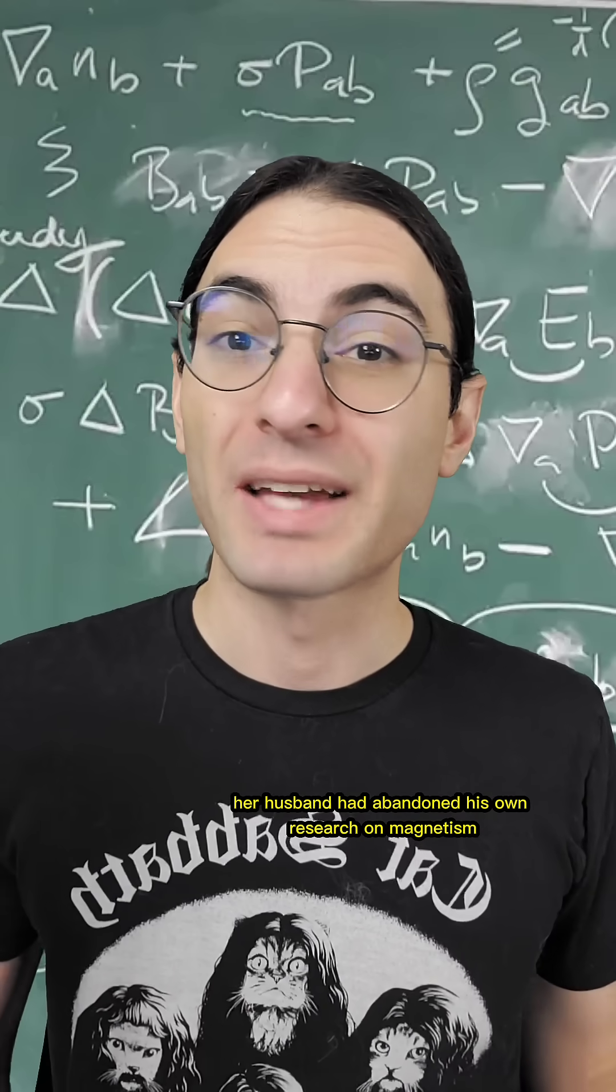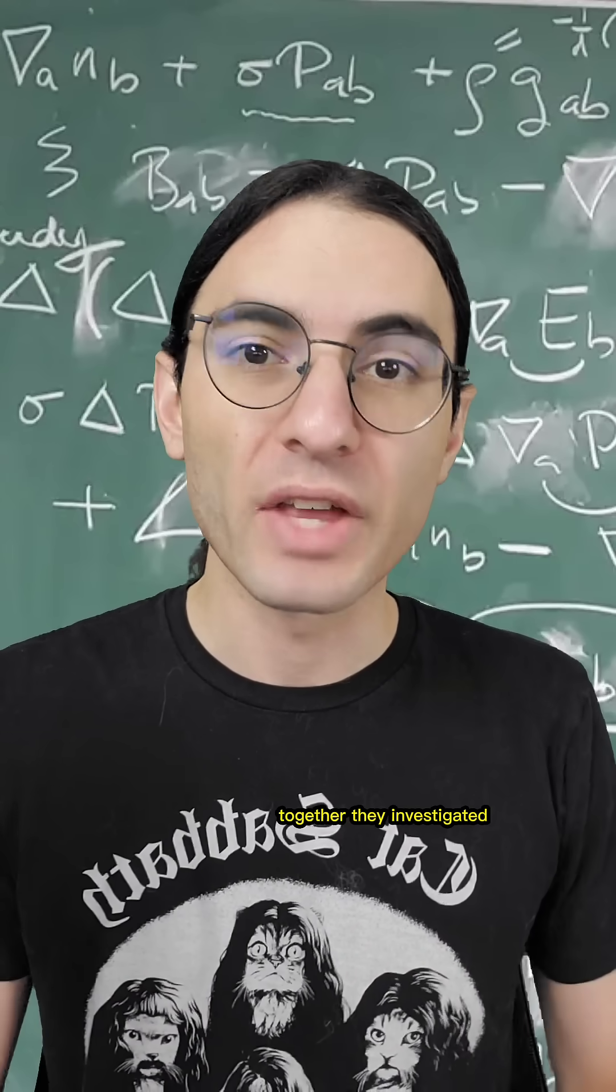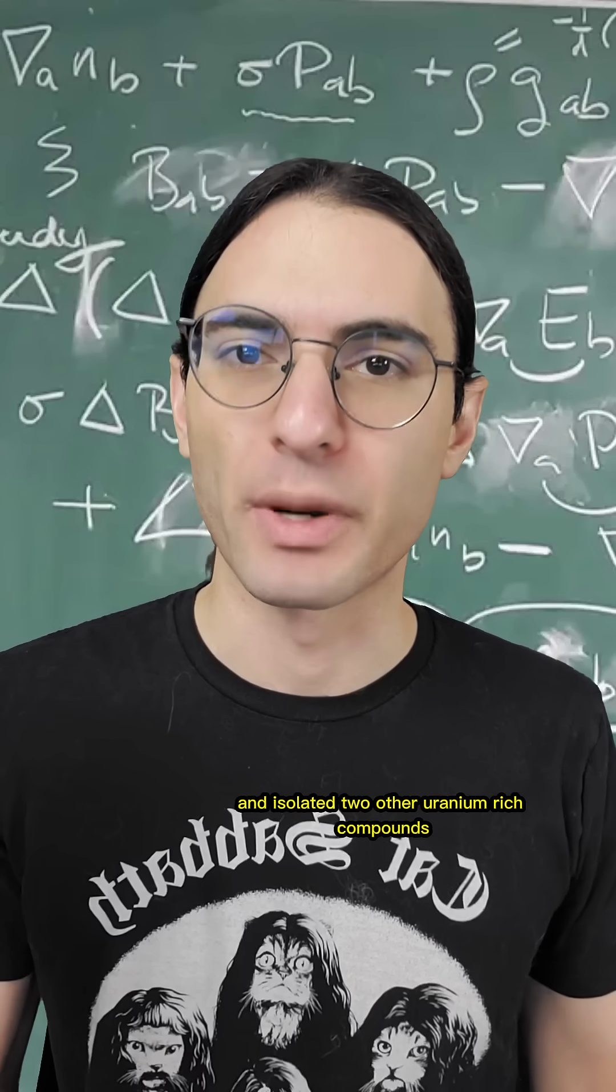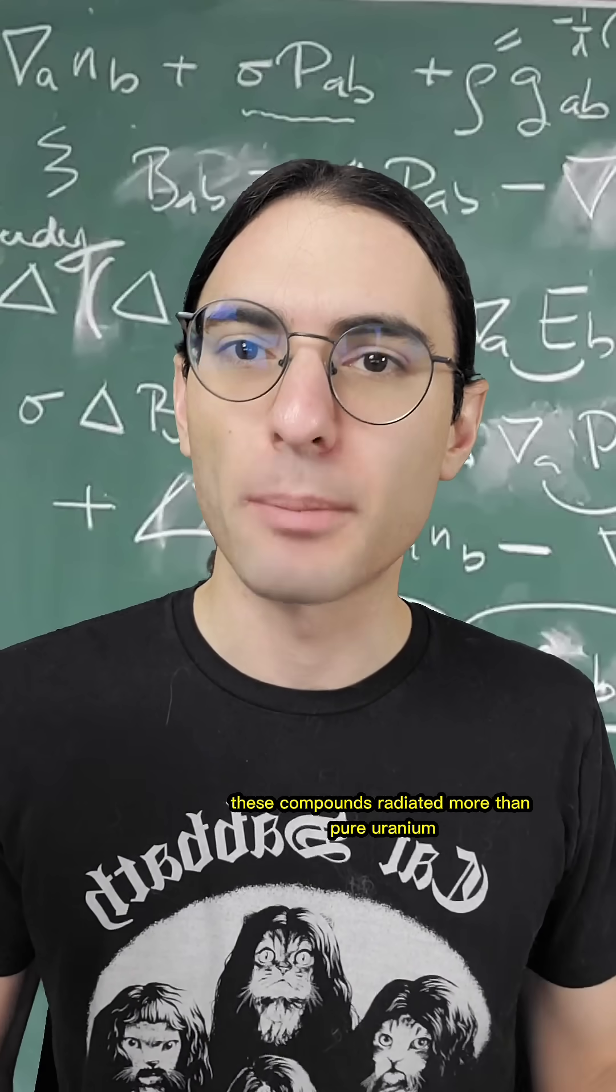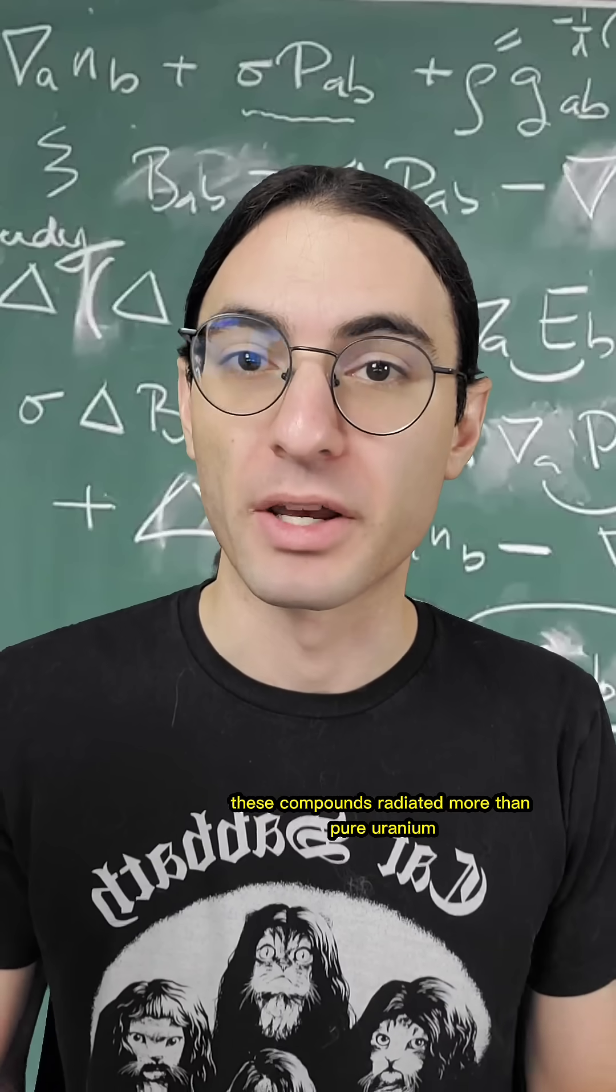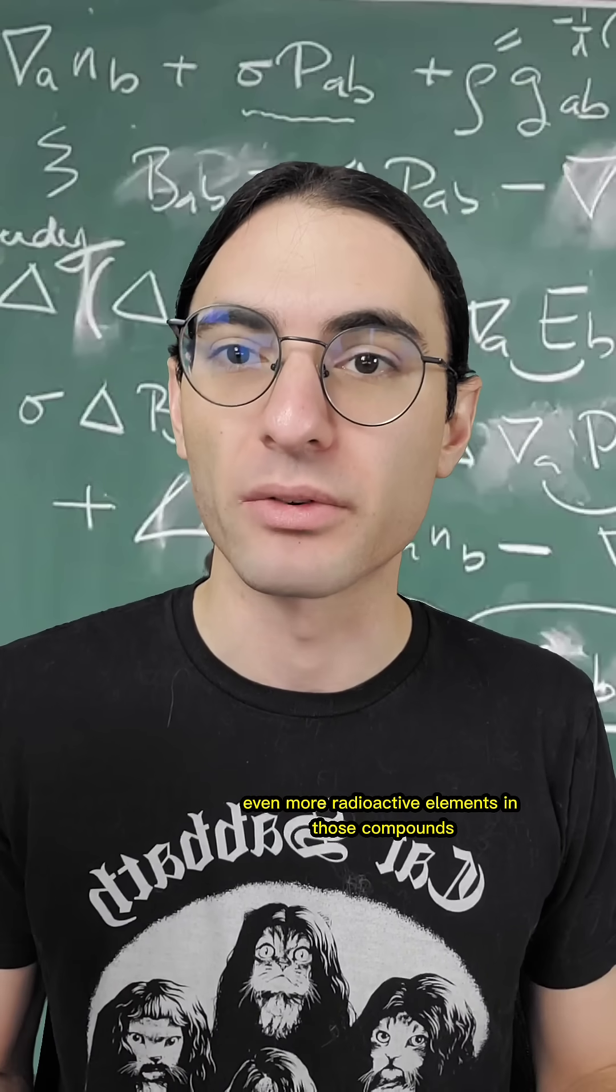By this point, her husband had abandoned his own research on magnetism to join her more interesting work. Together, they investigated and isolated two other uranium-rich compounds called pitchblende and torborite. And surprisingly, these compounds radiated more than pure uranium, leading the Curies to conclude that there must be other, even more radioactive elements in those compounds.